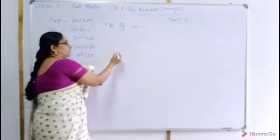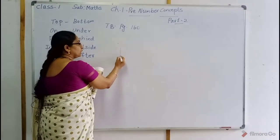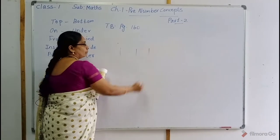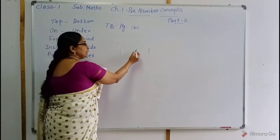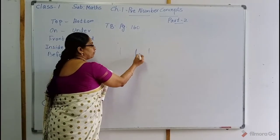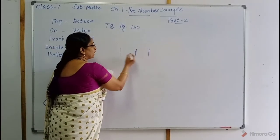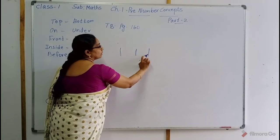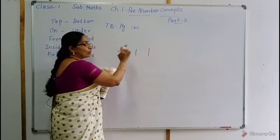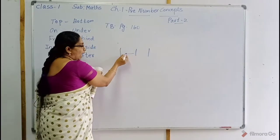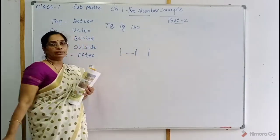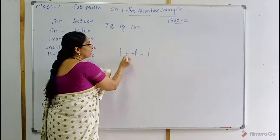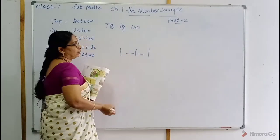Come here, children. Three things should be: this is the between object, this is the before object, and this is the after. Before, after.